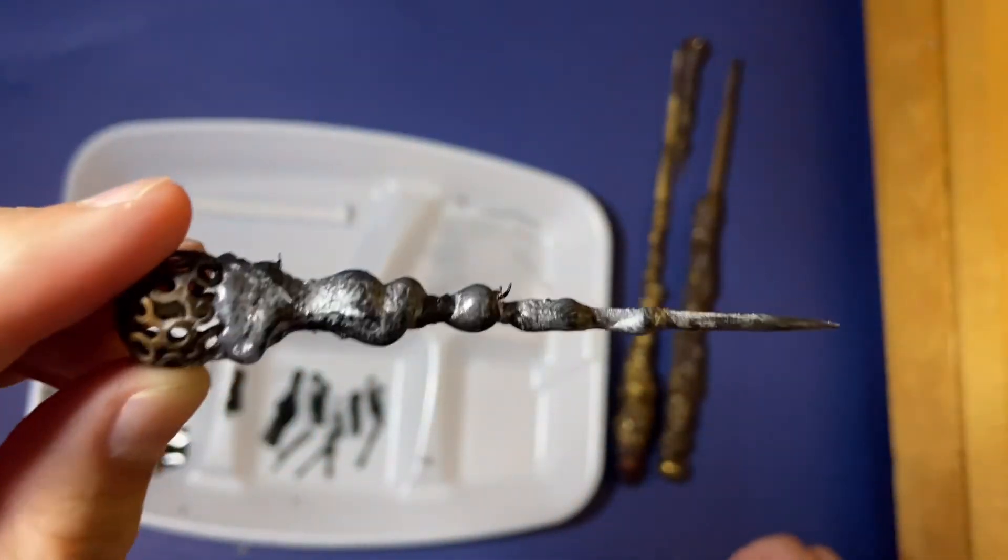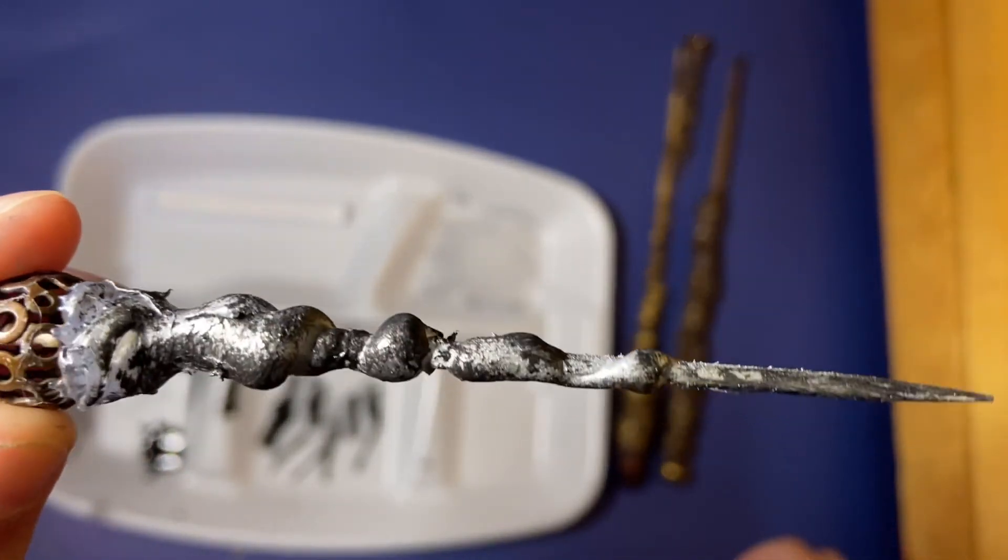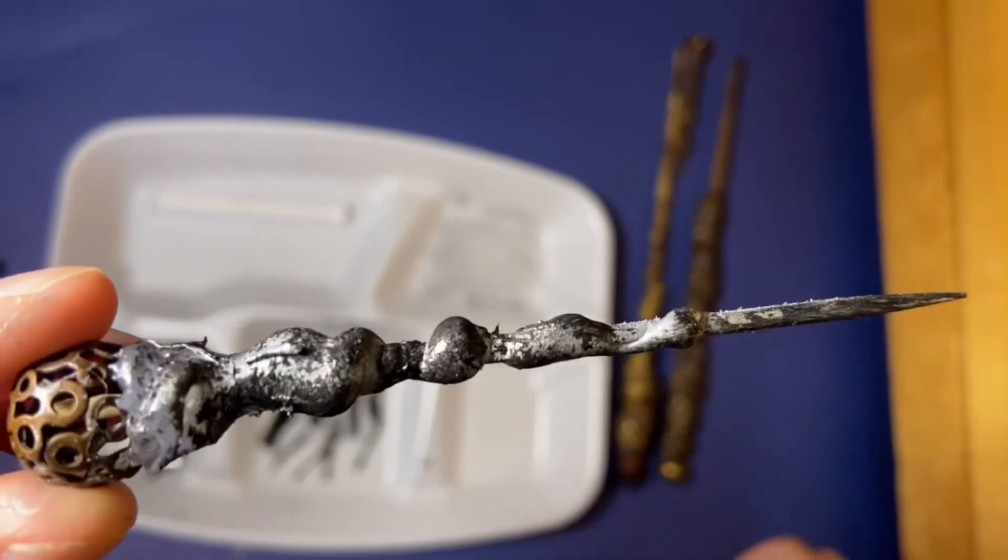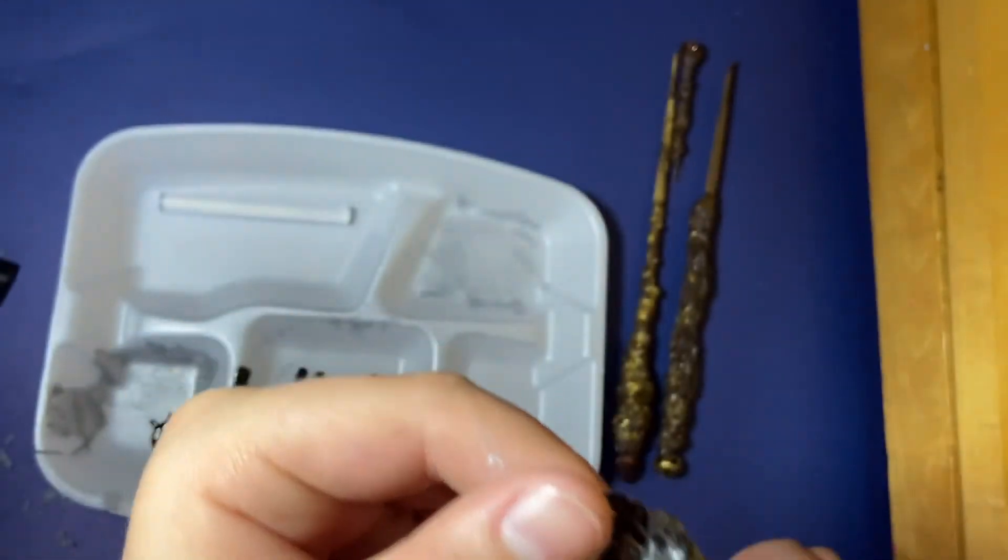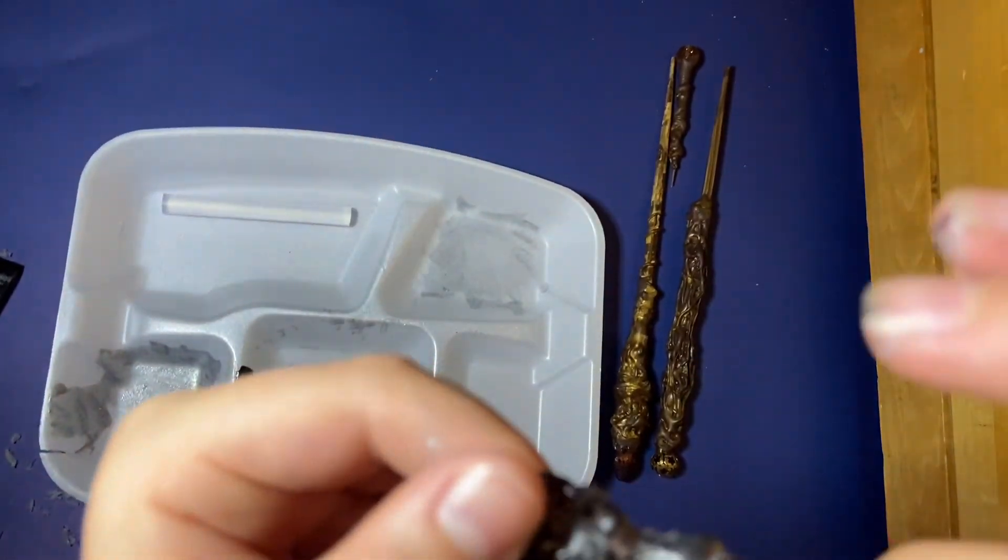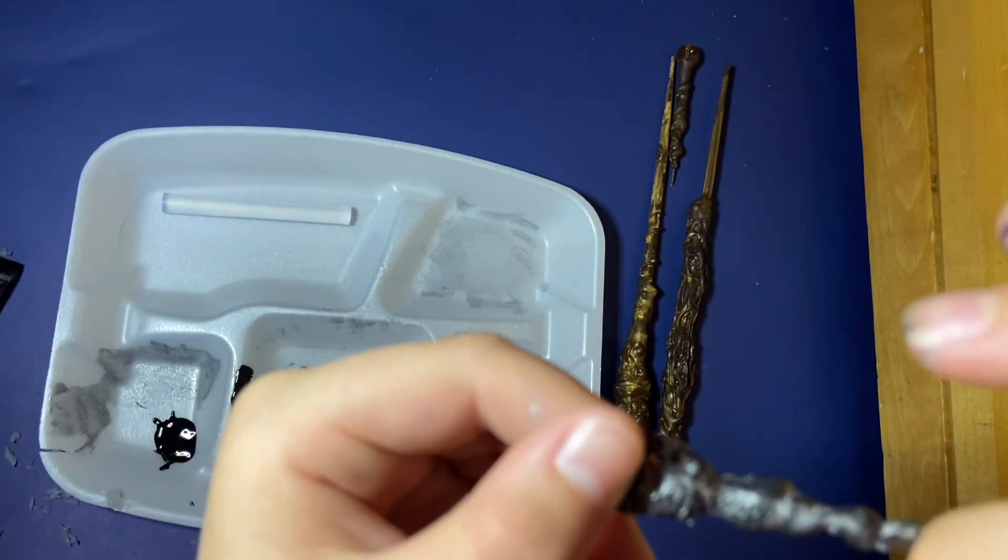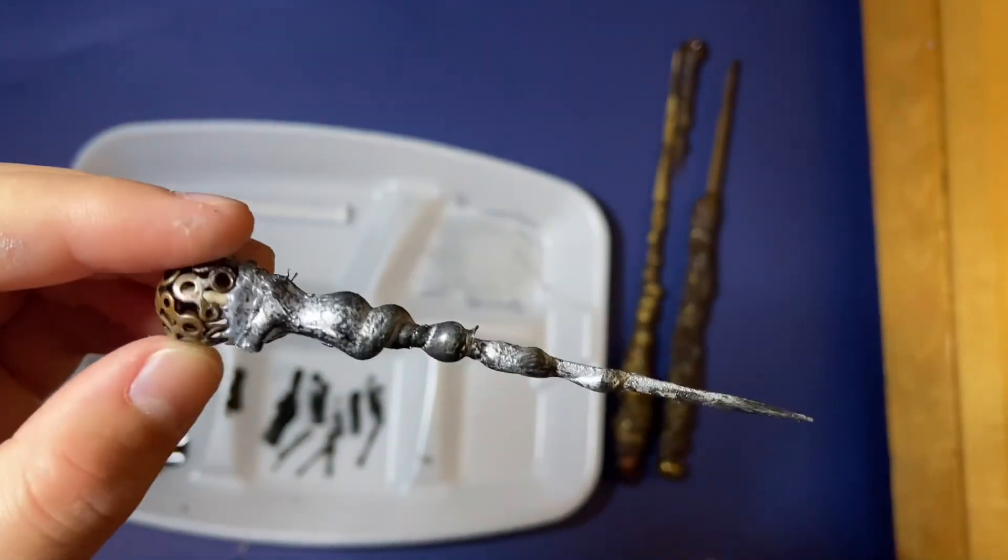Now after I did silver I went over with black and I actually think it looks really good. And you can make big or small wands.